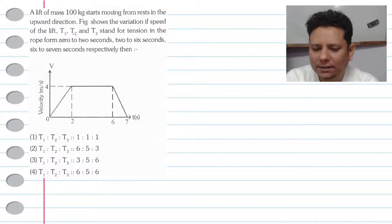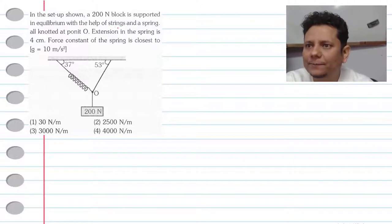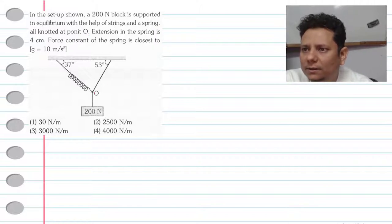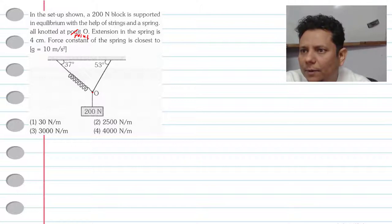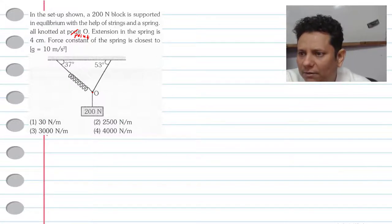Question C: In the setup shown, a 200 Newton block is supported in equilibrium with the help of strings and a spring, all knotted up at a point O. The extension in the spring is 4 centimeters. The force constant of the spring is closest to — given g = 10 — is it 30, 2500, 3000, or 4000 Newton per meter?